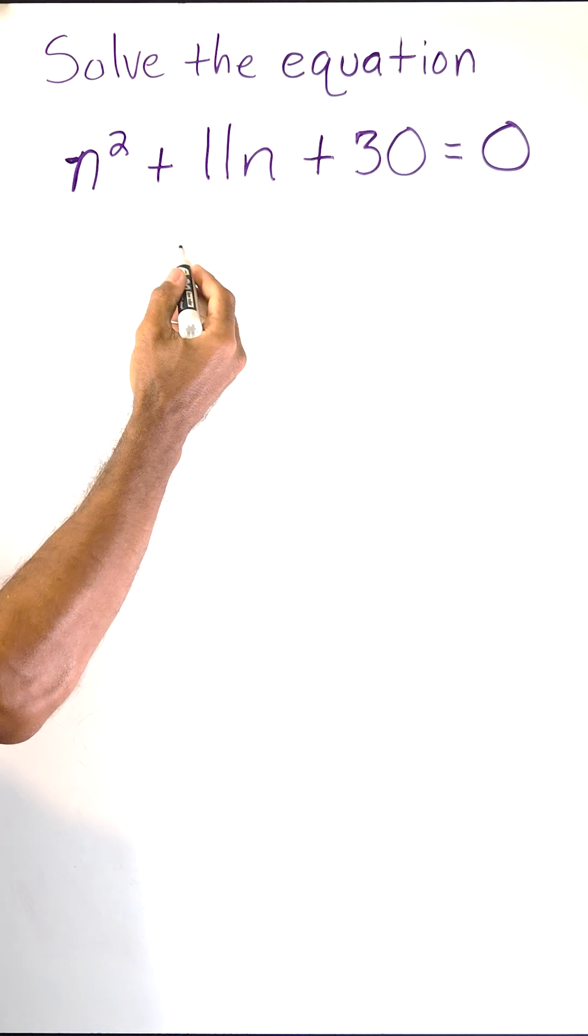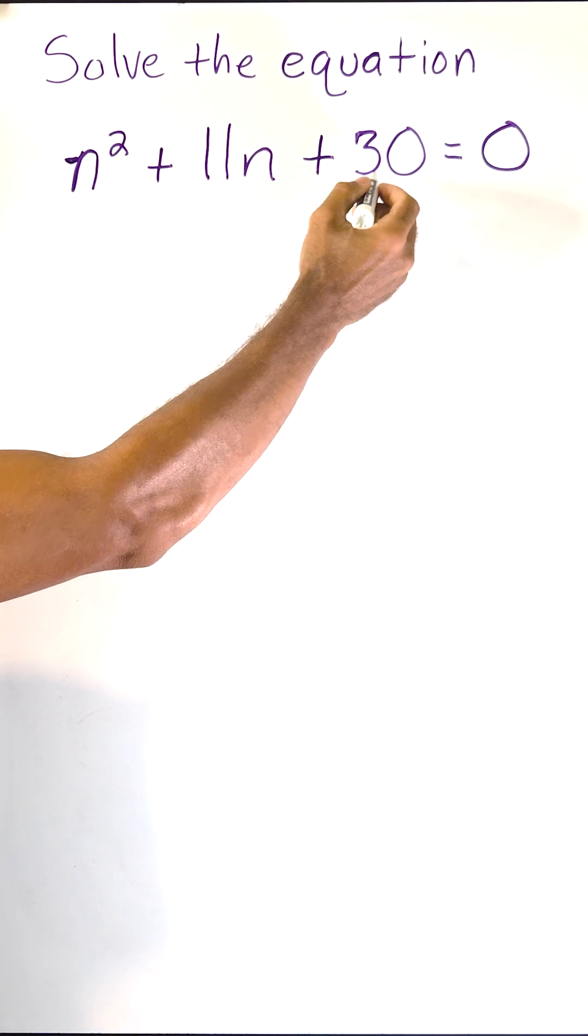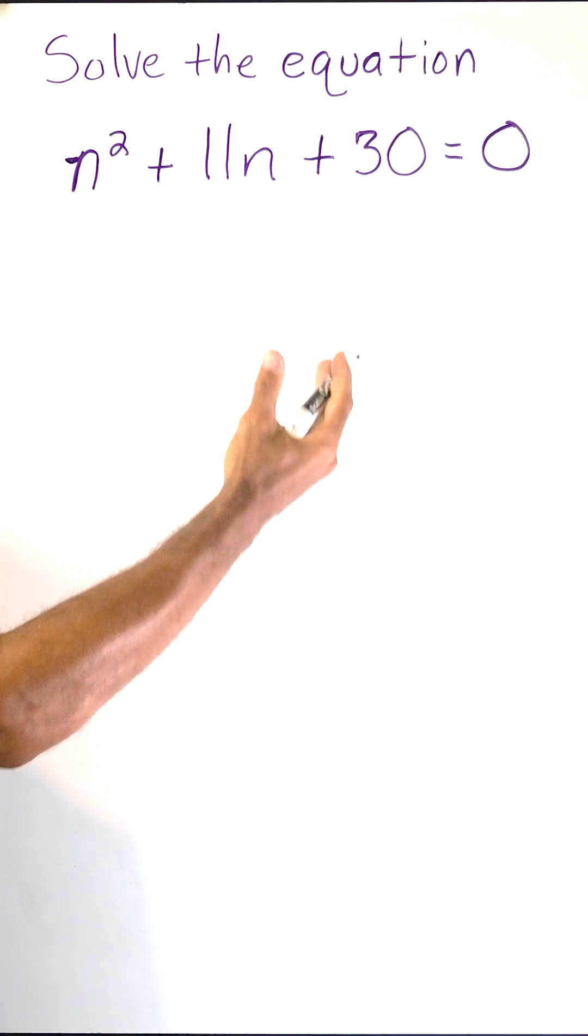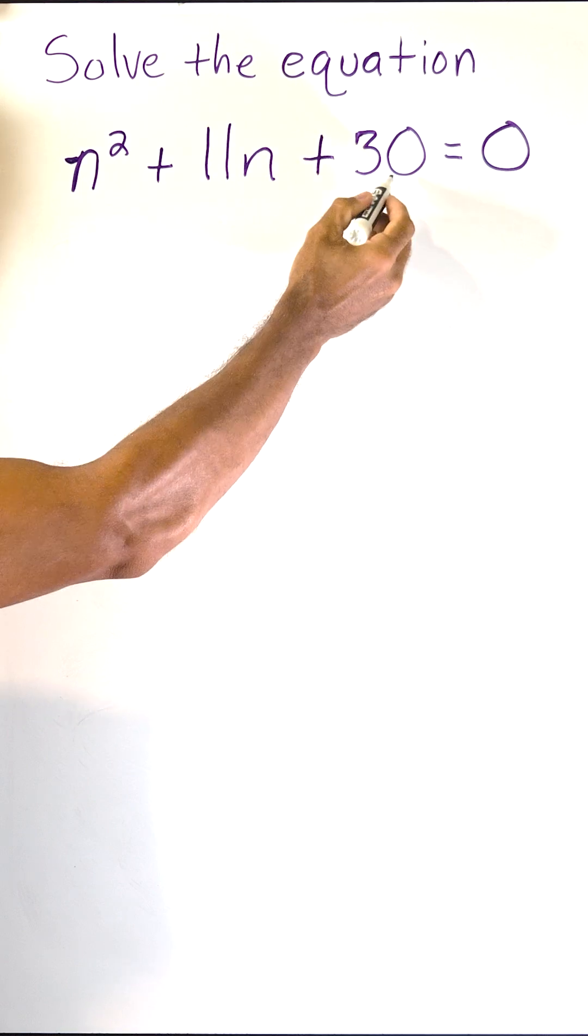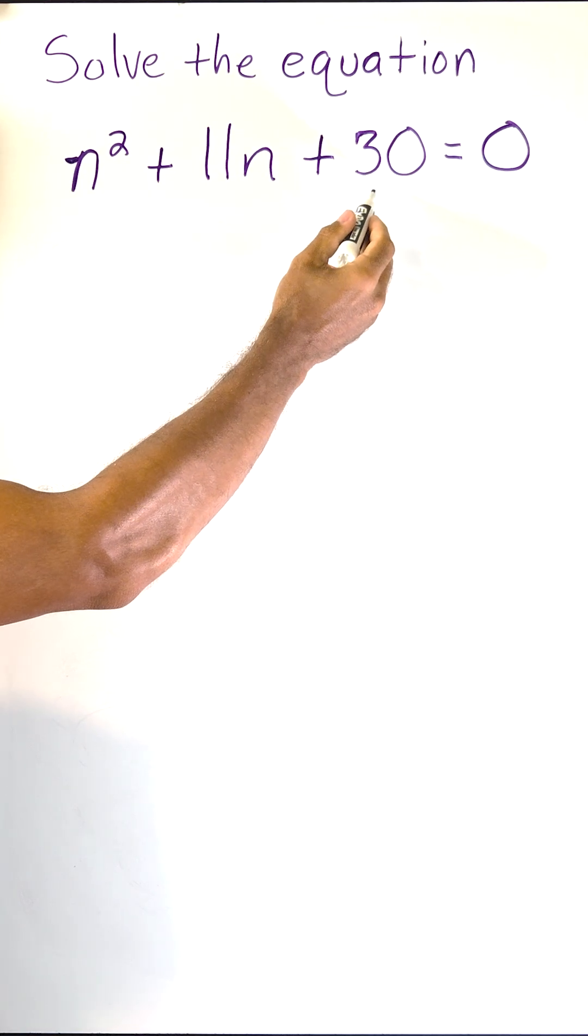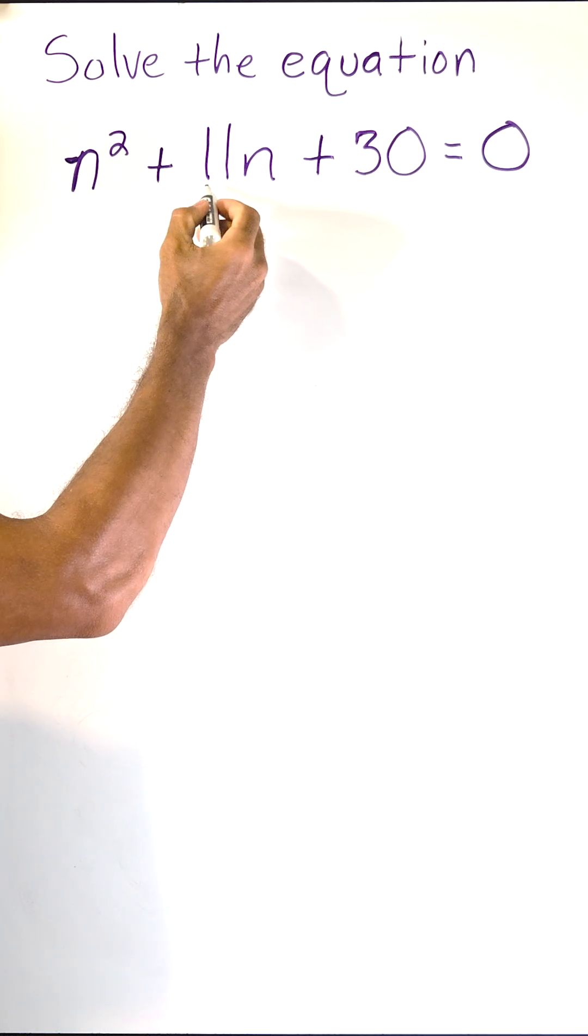To see if we can solve by factoring, what we do is we take a look at the third term and think, are there any numbers that we can multiply that would make that number? But when adding those two numbers, it would make this middle coefficient of 11.